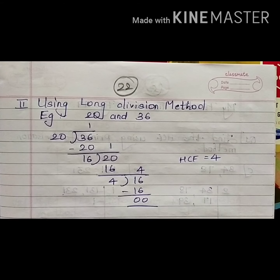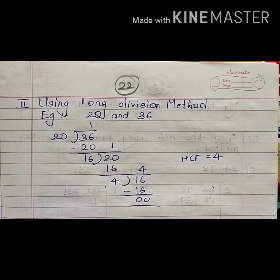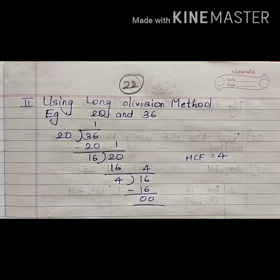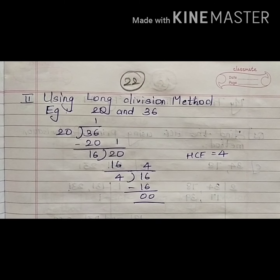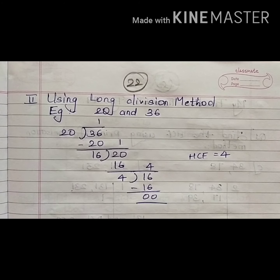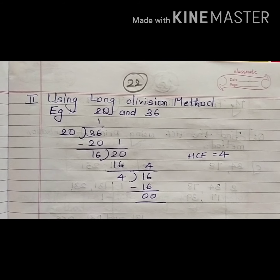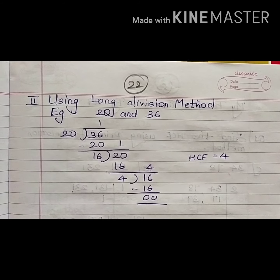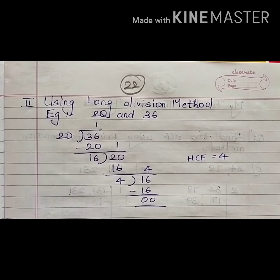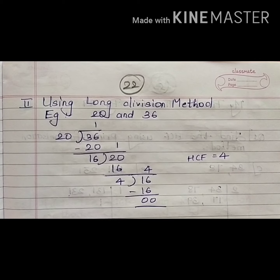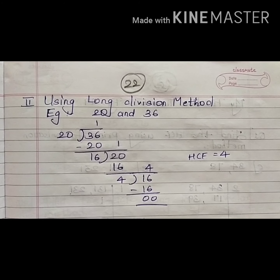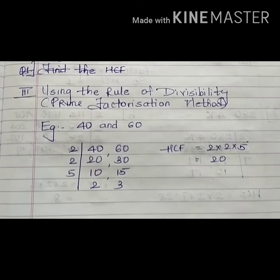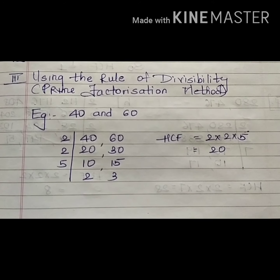Hello students, now we will start with HCF, that is Highest Common Factor. You might have already studied HCF in standard 4. We are already familiar with two methods: the listing method and the prime factorization method. In standard 5, we will learn two different methods — the long division method and the prime factorization method.